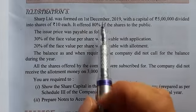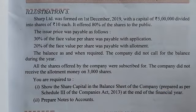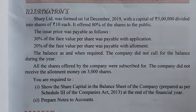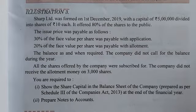Out of 50,000 shares, 80% of the shares are offered to the public. So 80% of 50,000 shares equals 40,000 shares issued to the public.